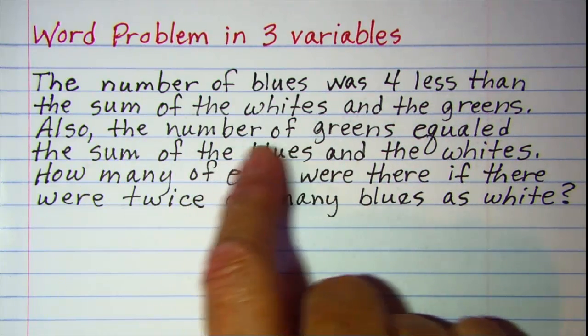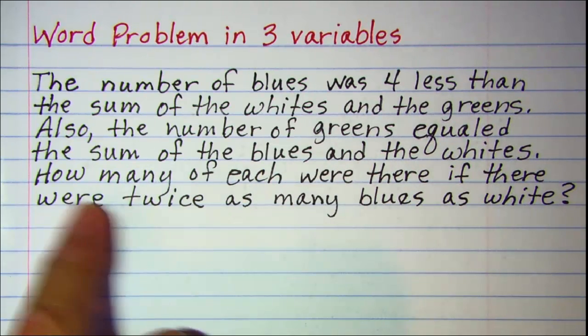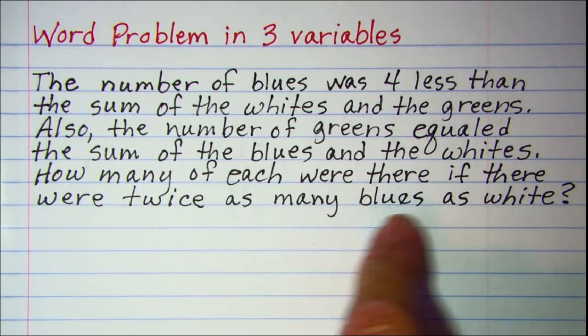Also, the number of greens equaled the sum of the blues and the whites. How many of each were there if there were twice as many blues as whites?